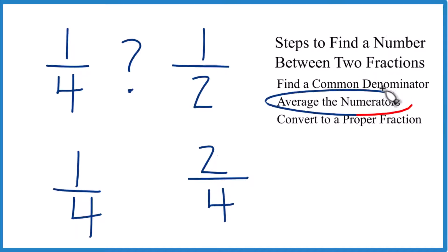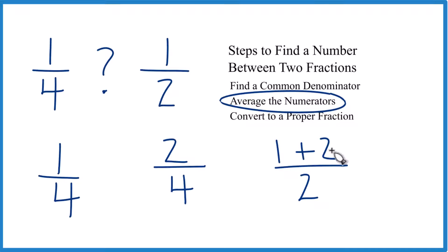Now we want to average the numerators here. So you probably can tell 1.5 or 1 and a half is between 1 and 2. But let's write it out. So to average these, we take the numerators 1 plus 2. Since we have 2 numbers, we're going to divide by 2. So 1 plus 2 is 3. And then we just bring the 2 across here. So 3 halves.